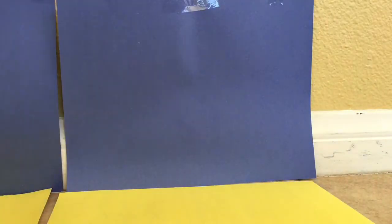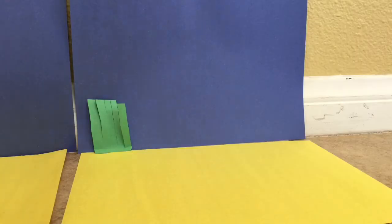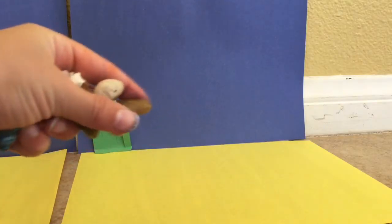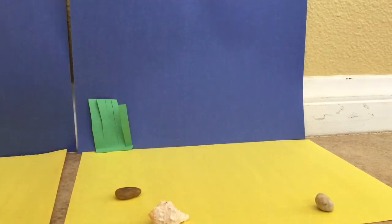First you're going to tape your blue to the wall, then you're going to put some sand things. Then you're going to add some seagrass thing or paper, rocks, seashells, and yeah.